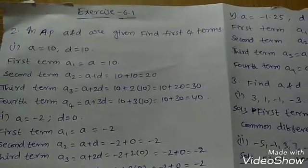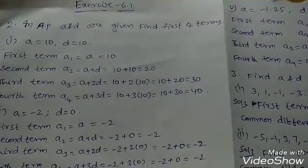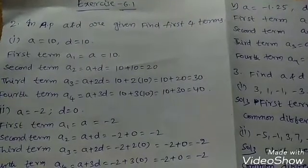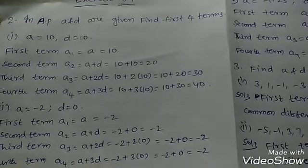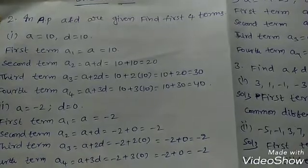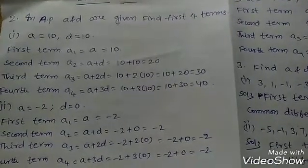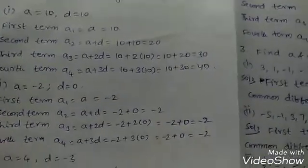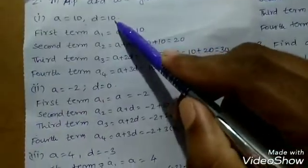Hi students, welcome to my channel Short Notes. Today our topic is Progressions, Exercise 6.1, Second bit in AP. First term and common difference are given; find the first four terms.